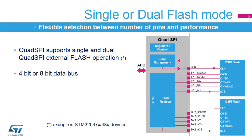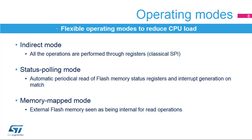The Quad SPI Memory Interface supports the connection of one or two external memories. This means that data can be transferred over a 4- or 8-bit data bus between the memory and the microcontroller. It gives the user flexibility to choose between the number of pins required for connection — 6 for a single and 10 for a double connection — and the performance of the data transfer, 4 bits for a single or 8 bits for a double connection.